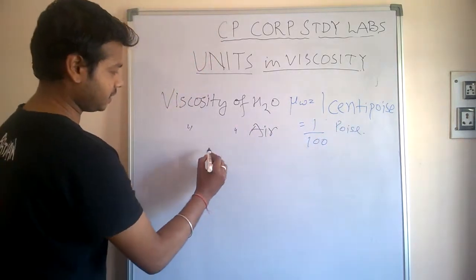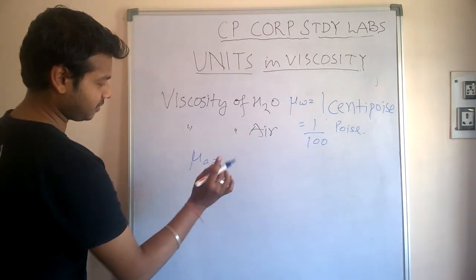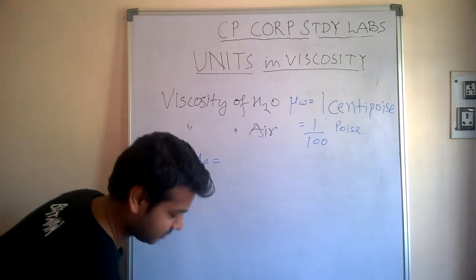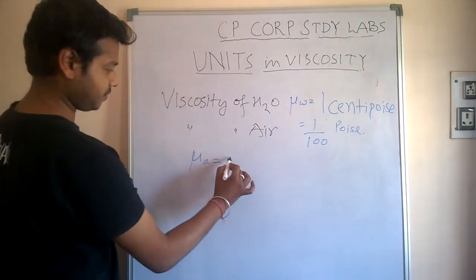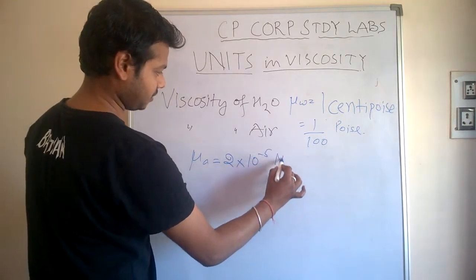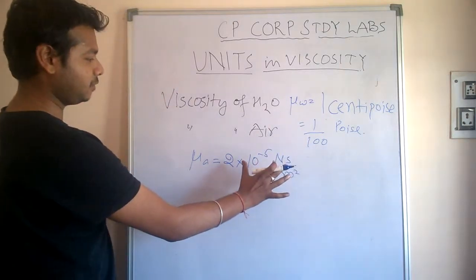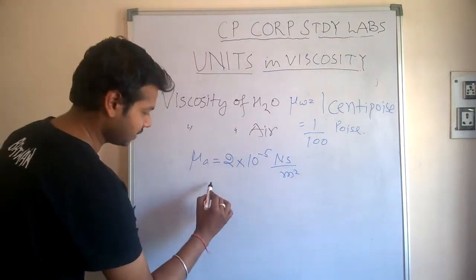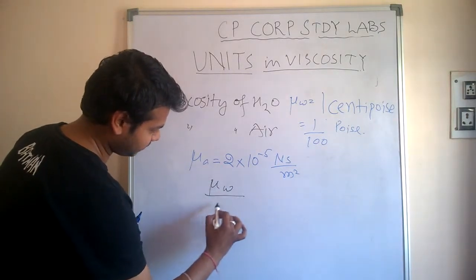Remember this value. Then μ of air is 2 × 10⁻⁵ newton second per meter square. If you can't remember this value, just remember what I am going to write next: μ of water by μ of air.